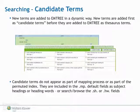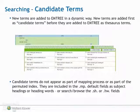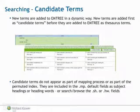New terms are added to M-tree in a dynamic way. New terms are added first as candidate terms before they are added to M-tree as thesaurus terms. Candidate terms do not appear as part of the mapping process or as part of the permuted index. They are included in the M-tree thesaurus as subject headings or heading words, and you may search or browse the subject heading or heading word fields.